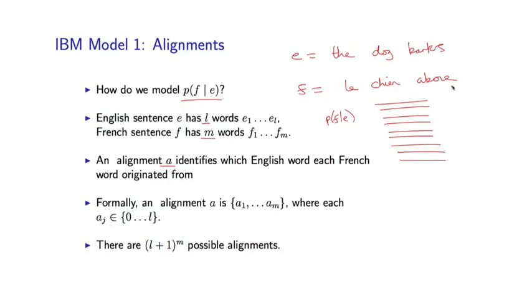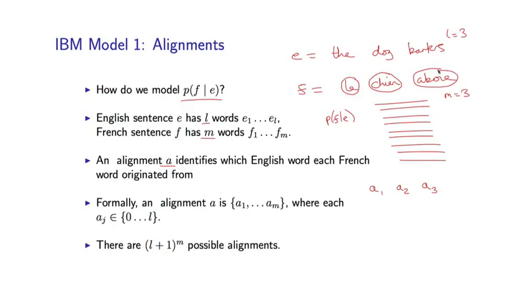So in this case I have M equals 3 French words and L equals 3 English words. An alignment is just going to be a sequence of values A1, A2, up to AM — which is 3 in this case. And it basically, for each French word, specifies which English word it's aligned to. So here's one possible alignment: this word is aligned to 'the', this word is aligned to this, and this word is aligned to this.